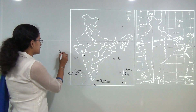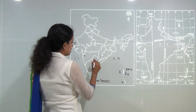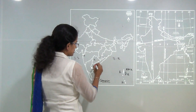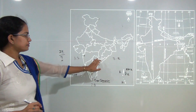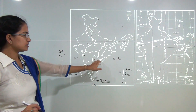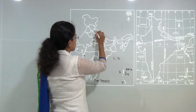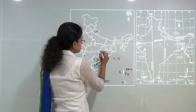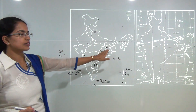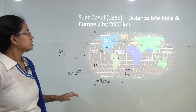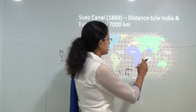At present, India has 29 states and 7 union territories. The most recently formed state is Telangana, separated from Andhra Pradesh. The three states formed prior to that were Uttarakhand, Chhattisgarh, and Jharkhand, all formed in the year 2000.